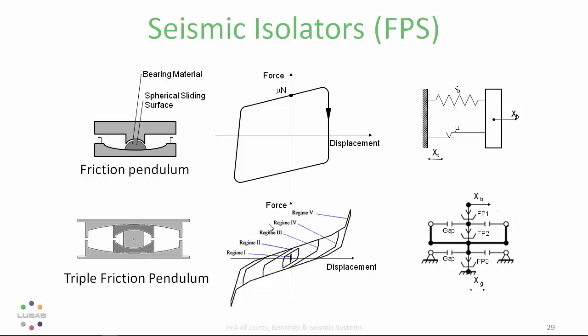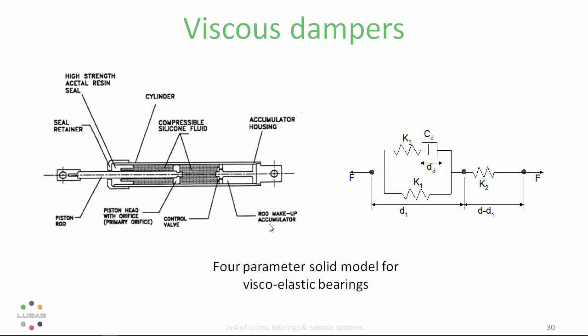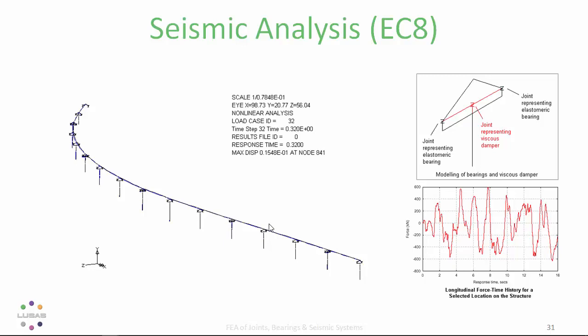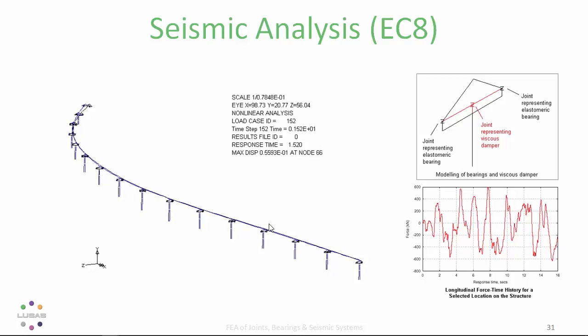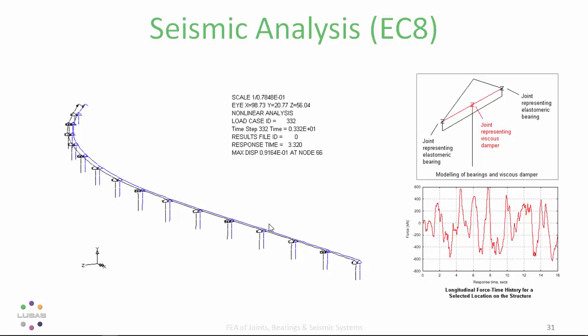LUCIS also allows for the inclusion of viscoelastic dampers, such as the four-parameter solid model comprising up to three springs and a dashpot. These non-linear isolators and dampers can be included in a global analysis, as they have been in a 1,108-metre, or over 3,600-foot long, multi-span pre-stressed concrete road bridge in the Mediterranean region.